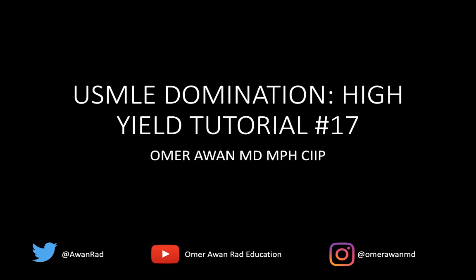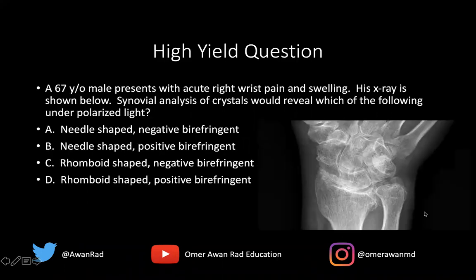Hello everyone, and welcome to USMLE Domination Series week 17. We have a great tutorial here. This is part three of our arthritis series. So let's go ahead and get right to it. This is the high-yield question: we have a 67-year-old male presenting with acute right wrist pain and swelling. His X-ray is shown below.